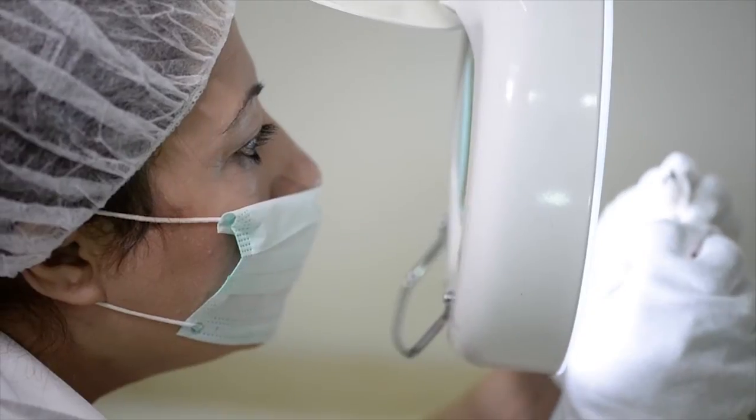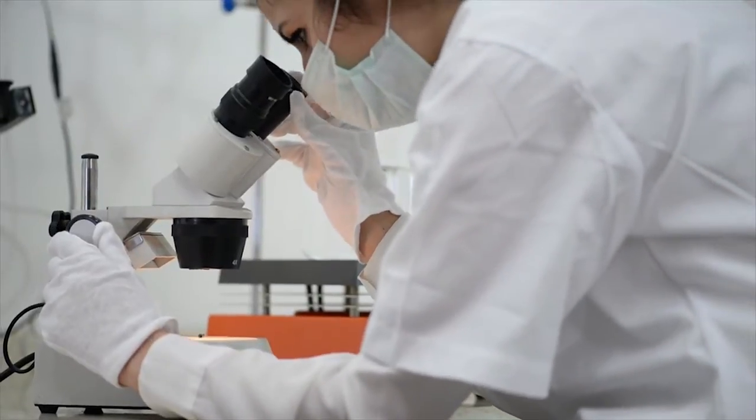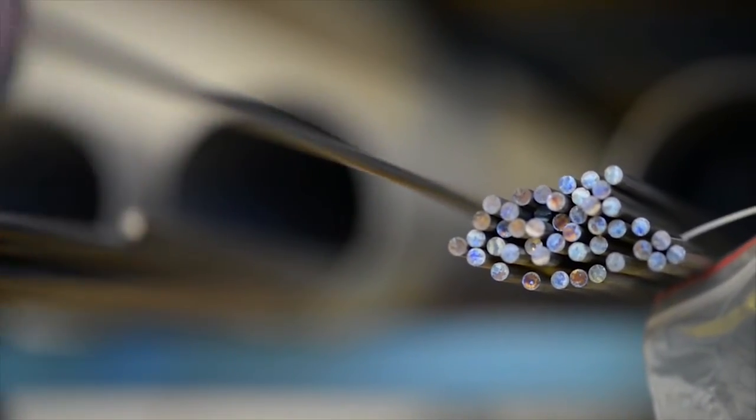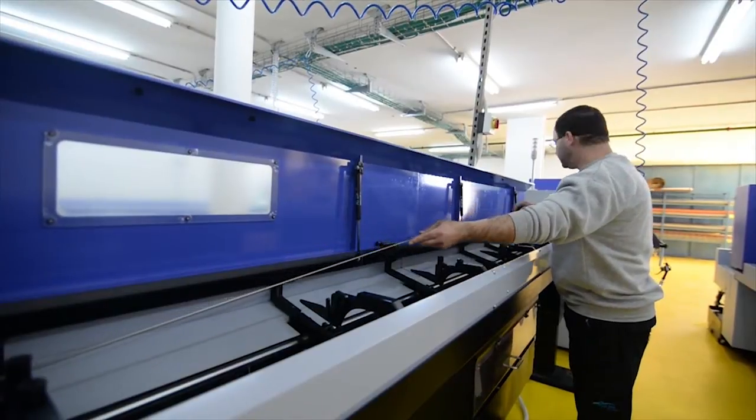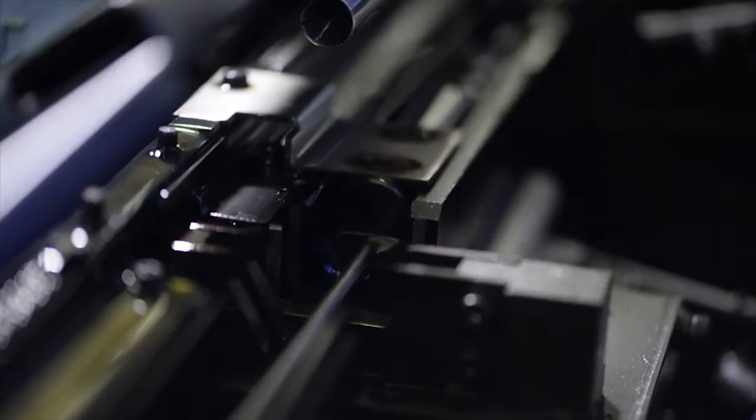Dental implant production at Alphagate starts with titanium bars that are first cut into pegs of various lengths.